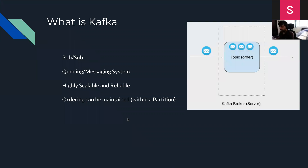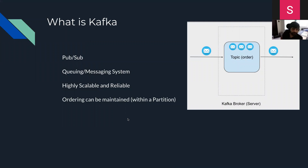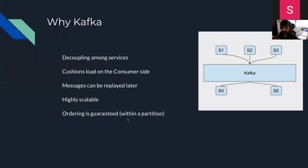So basically, what is Kafka? It's based on a publisher-subscriber model where a producer will produce some message and a consumer will receive a message. It's a queuing system or messaging system. It is highly scalable and reliable, and ordering is maintained — but within a partition. We'll cover everything in more detail in future videos.